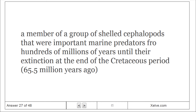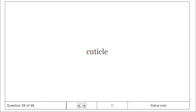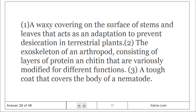Ammonites. A member of a group of shelled cephalopods that were important marine predators for hundreds of millions of years until their extinction at the end of the Cretaceous period, 65.5 million years ago. Cuticle. A waxy covering on the surface of stems and leaves that acts as an adaptation to prevent desiccation in terrestrial plants; also, the exoskeleton of an arthropod consisting of layers of protein and chitin, and a tough coat that covers the body of a nematode.